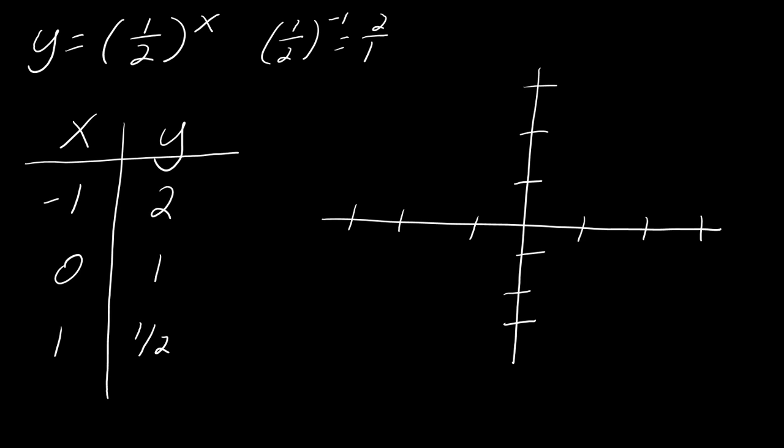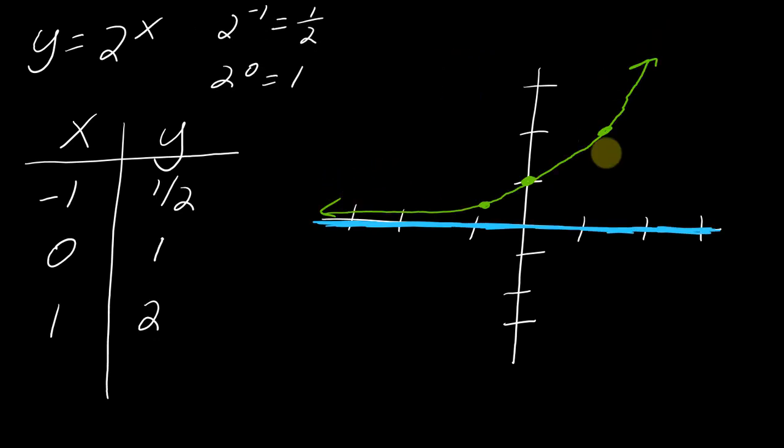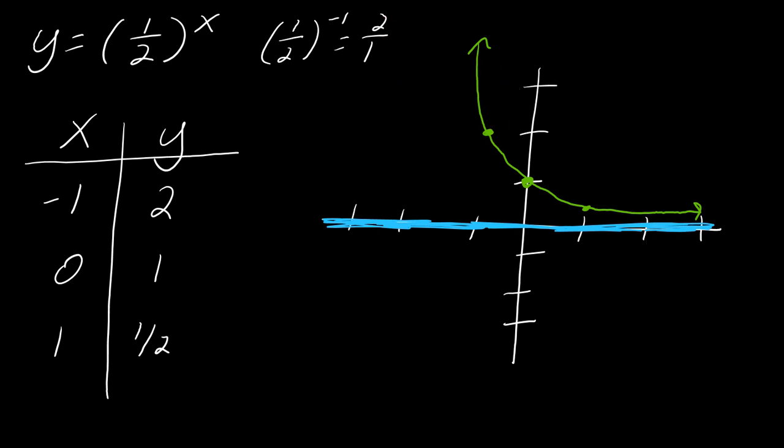Okay, so now let's graph those points. So I've got negative 1, 2, 0, 1, and 1, 1 half. It's the same idea. So this is still going to end up being this asymptote, this line that we can't cross. And so we're just going to go like that. And so that's the other shape. So you have either graphs that can go up this way, or you could have graphs that are shaped like this.